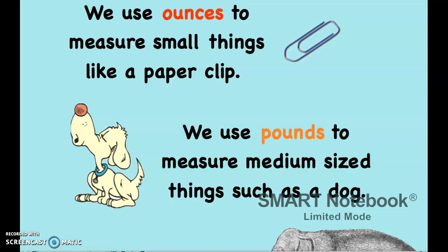We use ounces to measure small things like a paper clip. Remember that an ounce, as we stated before, is like a slice of bread — one slice of bread. We use pounds to measure medium-sized things such as a dog, and remember that one pound from last week we said would be a loaf of bread.